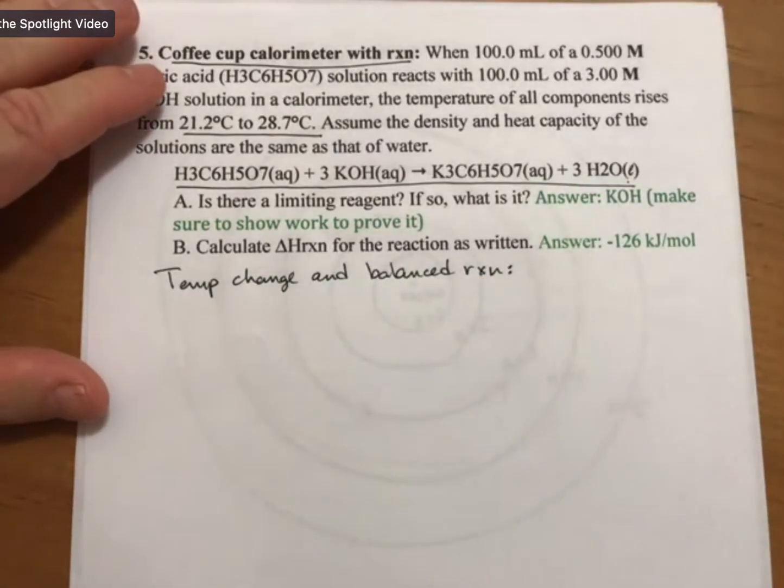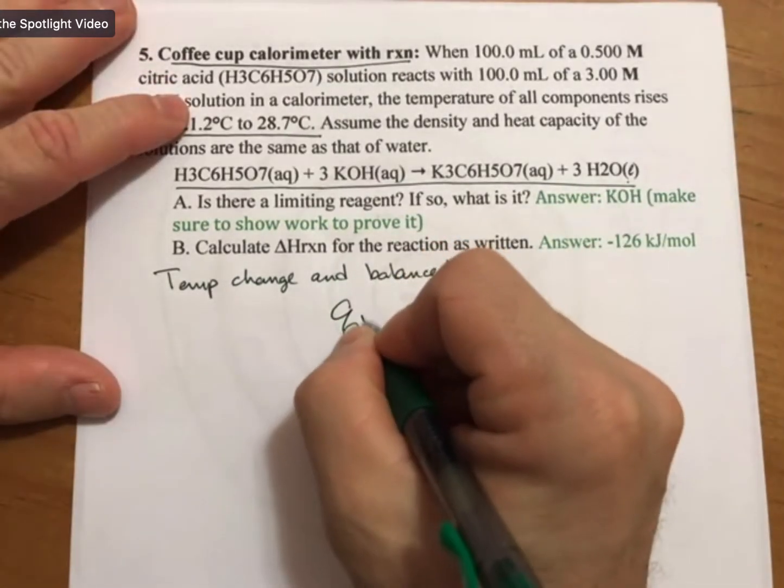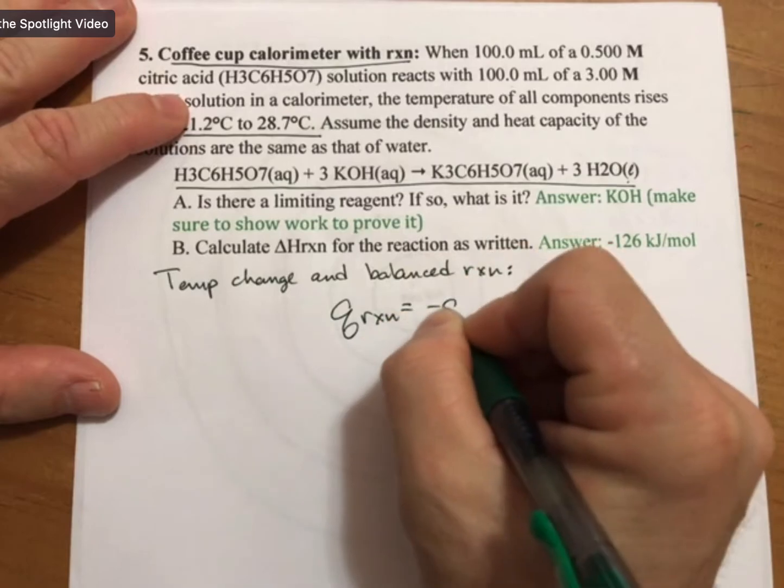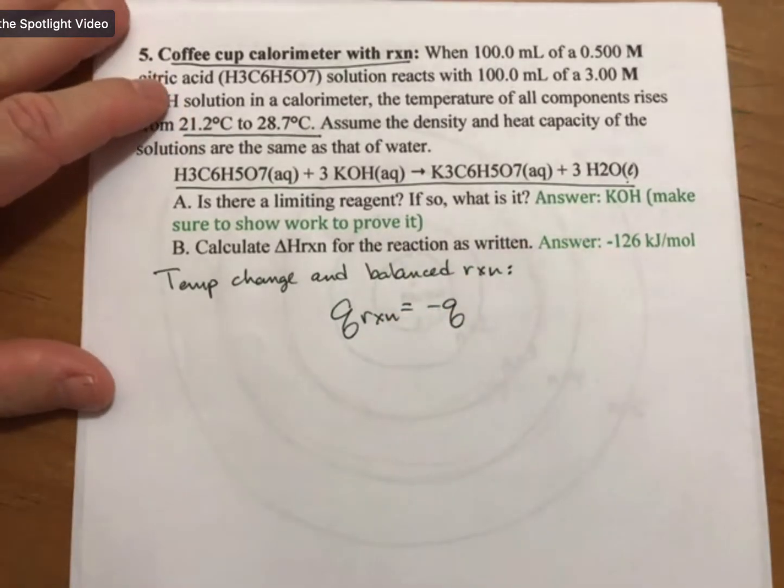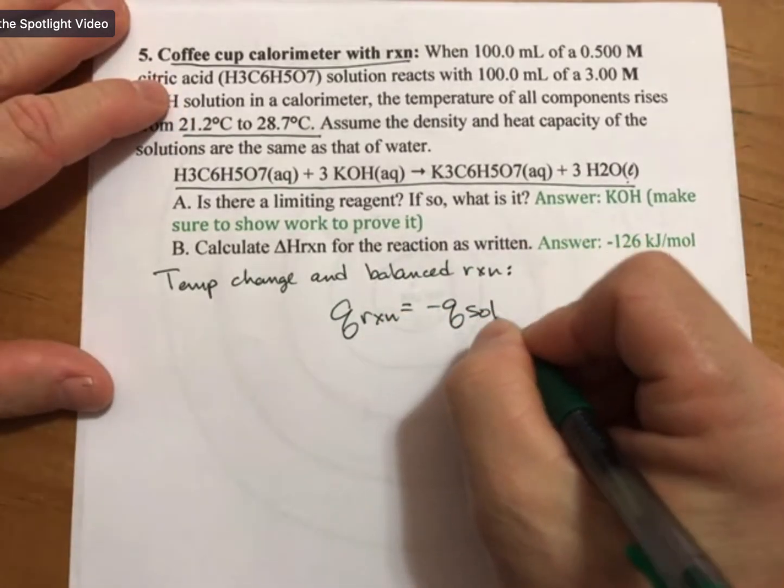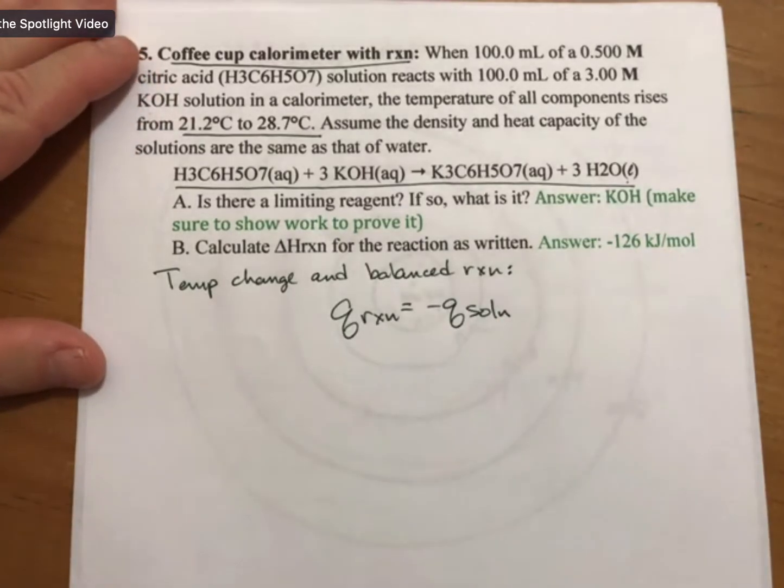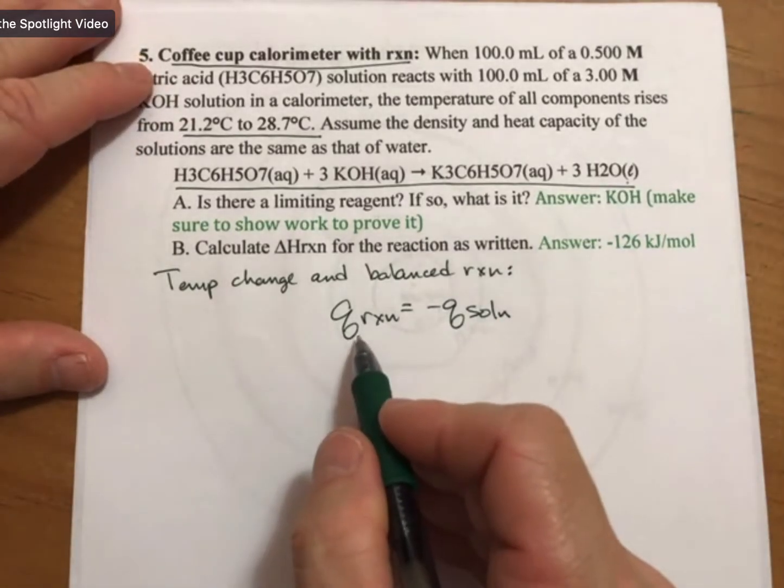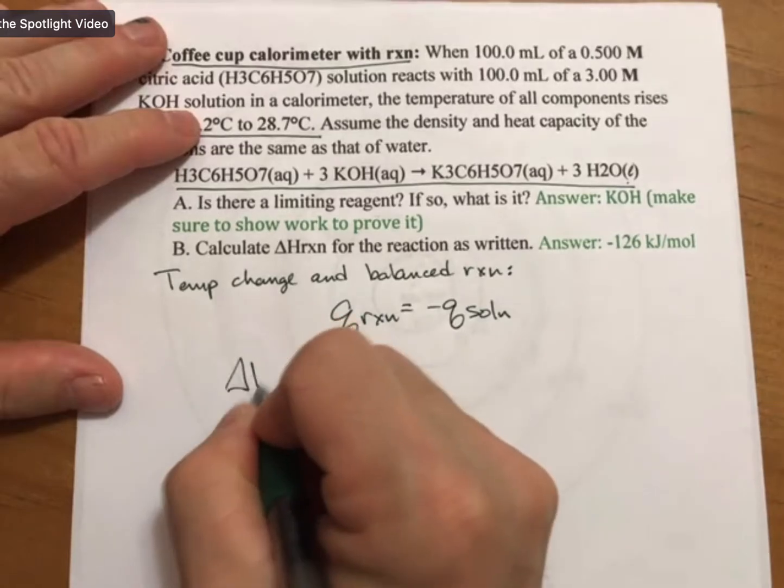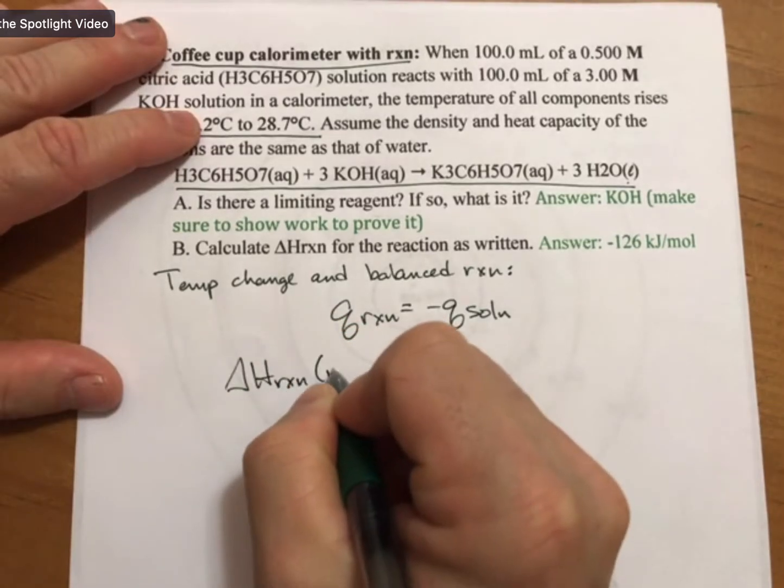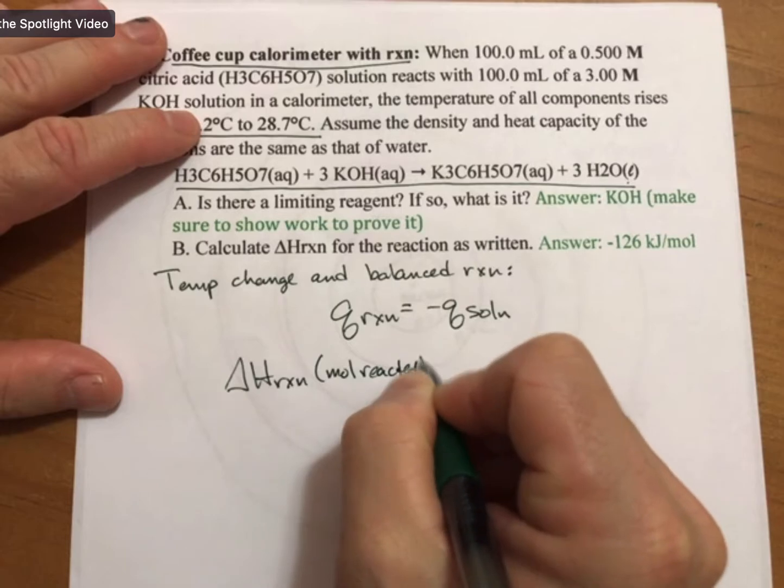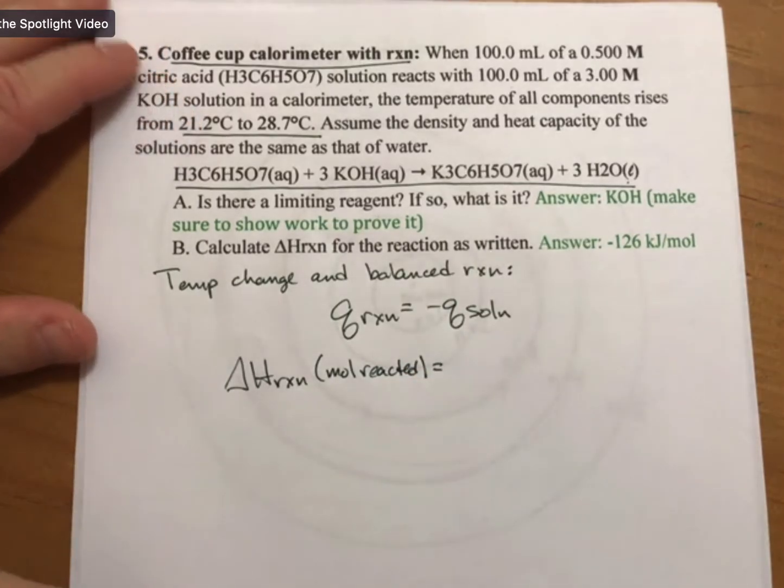That means that you're going to write down Q reaction equals minus Q solution. And the Q reaction is always the same. It's always delta H reaction times moles reacted.